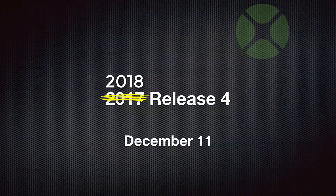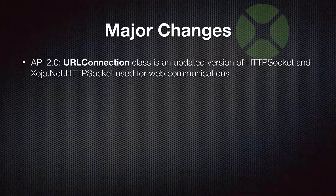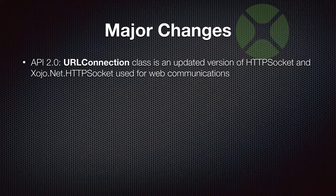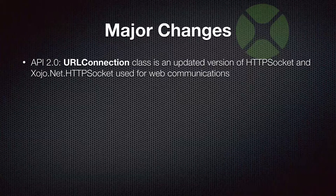The final release of the year is 2018 Release 4, which came out on December 11th with over 110 items. Its major changes include the first new API 2.0 class: URL connection. This is essentially an updated replacement for both the original HTTP socket and HTTP secure socket classes as well as the Zojo.net HTTP socket introduced a few years ago. URL connection is more modern, uses all the latest protocols, and has support for asynchronous and synchronous connections. It's pretty easy to use.